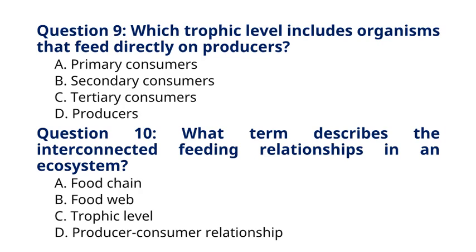Question 10. What term describes the interconnected feeding relationships in an ecosystem? A. Food chain. B. Food web. C. Trophic level. D. Producer-consumer relationship. The correct answer to question 10 is option B, Food web. Explanation: A food web depicts the complex network of feeding relationships among different organisms in an ecosystem, including multiple interconnected food chains.